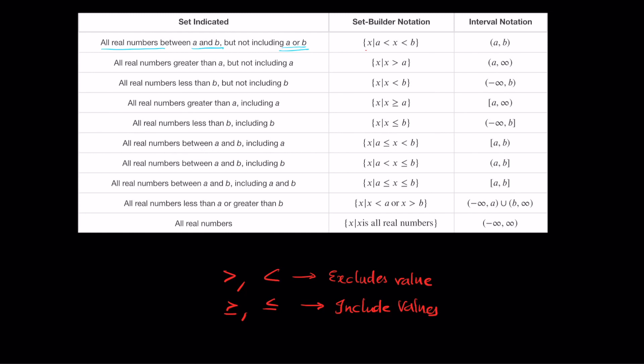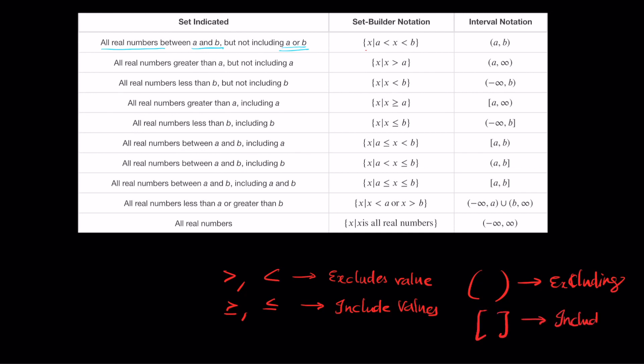If you have values between a and b but don't want to include a and b, we write it as parenthesis a comma b. Parentheses are used for excluding values; square brackets are used for including the value. If you see a parenthesis before a number, that number is not included in the set. If you use a square bracket, it is included in the set.